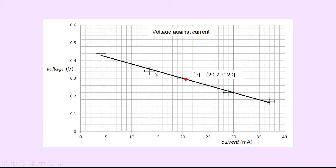Plot your points and just ignore the red dot for now — we'll come to that in part B. Before we talk about the line of best fit, notice that we've added error bars on for all the points. It was plus or minus 1 milliamp for the current, so the horizontal error bars on the x-axis are one box width, as that equals 1 milliamp. On the y-axis, the vertical error bars should be plus or minus 0.02 volts in length, which is also one box width on the y-axis.